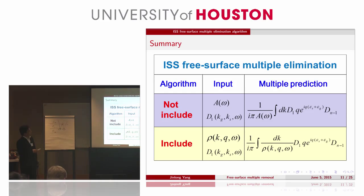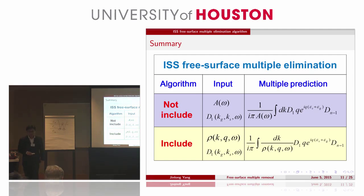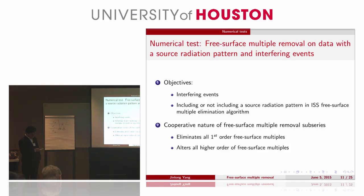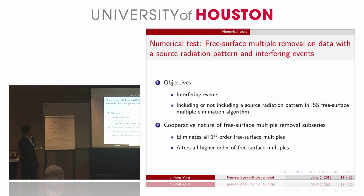This is a summary comparison. The difference is that we incorporate the variation of the angle dependence into our algorithm — it depends on K. Based on this, I will show you Mark's example that includes the interfering events. Our objective of the numerical test is to remove free-surface multiples on data with the interfering events. The data is generated by a source array with a radiating pattern. We also want to examine the impact of the radiating patterns.